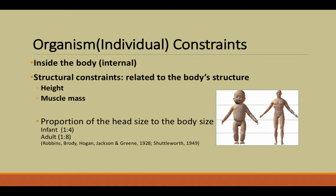An organismic or individual constraint is internal to the individual — these are changes that take place inside the body. Structural constraints are related to body size and structure, including changes in height, muscle mass, and weight that affect a person as they age. For example, the proportion of head size to body size changes as we age: in an infant, the head accounts for about a quarter of the body, whereas in an adult it accounts for about an eighth. So as structural constraints change, an adult puts less effort into holding their head up compared to a child.